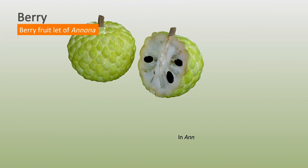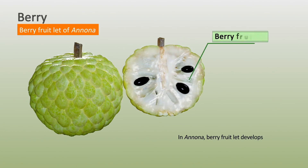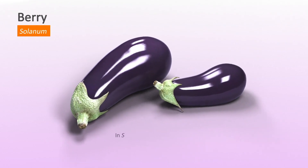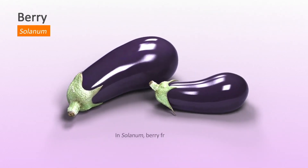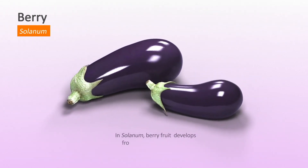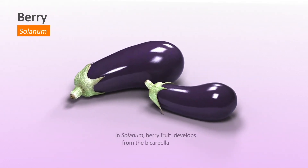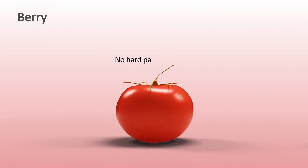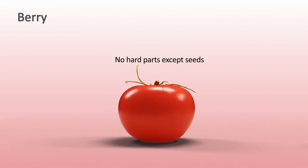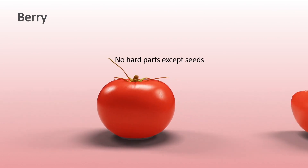Berry: In Anona, berry fruitlet develops from the monocarpillary ovary. In Solanum, berry fruit develops from the bicarpillary ovary. The fruits with no hard parts, except seeds, are called berry, or baccate fruits.